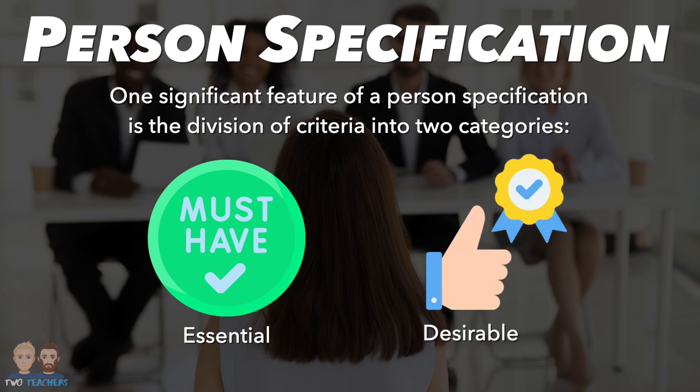These are essential and desirable. The essential criteria represents the non-negotiable qualifications and skills required to apply for the position. For example, if a candidate must have a bachelor's degree in business management to be eligible for the role, it is categorized as an essential requirement. Desirable criteria, on the other hand, are qualifications, skills, or attributes that are not mandatory but would enhance an applicant's suitability for the role. For example, for a marketing assistant position, GCSEs in maths and English might be essential, while having a degree in business or marketing could be listed as desirable.